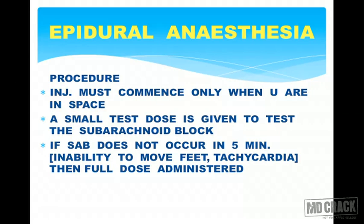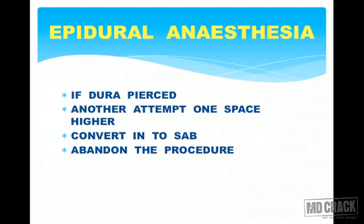A small test dose is given to check for subarachnoid block. If subarachnoid block does not occur within five minutes — indicated by inability to move the feet, tachycardia, and sensory and motor block of lower limbs — then the full dose is given. In epidural anesthesia, even after injection it takes 5–10 minutes for the block to develop, unlike spinal anesthesia where block occurs almost immediately.